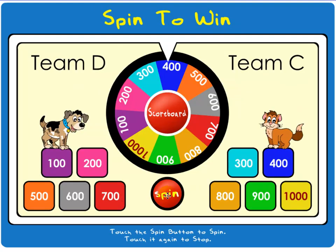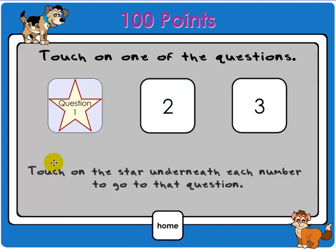If the spinner lands again on 100, they can go to the 100 point value page and you can see that question 1 has already been selected. So, they would need to choose one of the other questions.